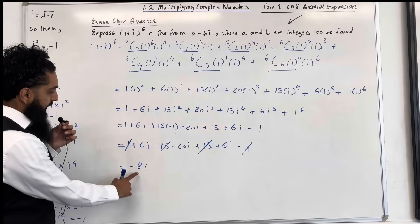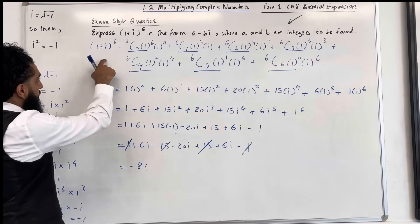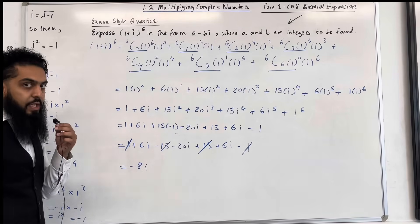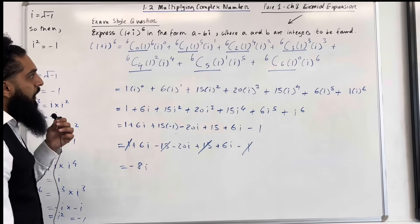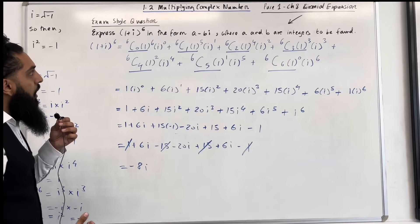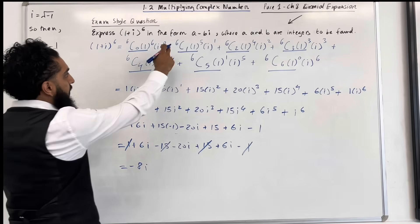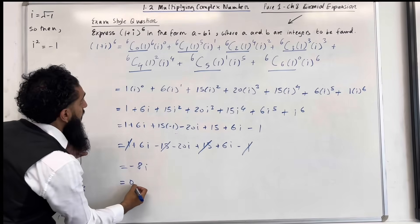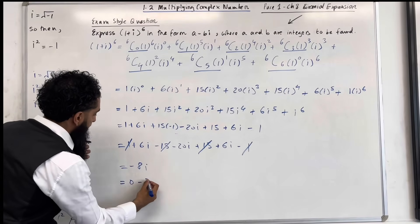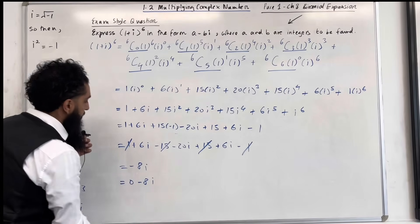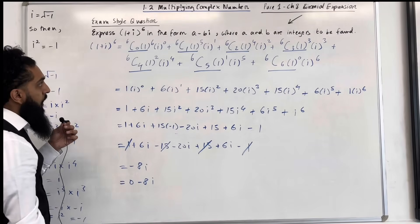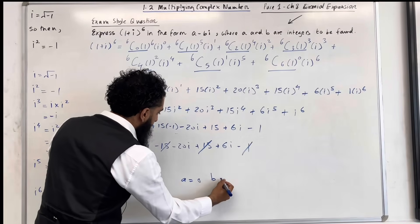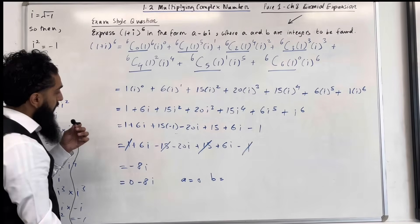So this is the answer: (1 + i) to the power 6 simplifies to minus 8i. We want to write our answer in the form a minus bi, so this is the same as writing 0 minus 8i, where a equals 0 and b equals 8.